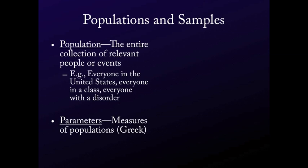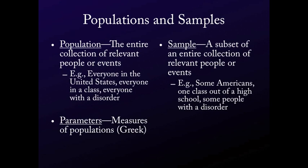When I say measures of populations, basically what I mean is just a way of summarizing the data — for example, the mean of a population, the standard deviation of a population, what's the modal response, stuff like that. A sample is just some subset of an entire collection — it's just some subset of your population.